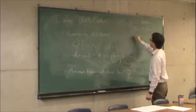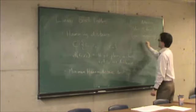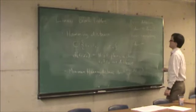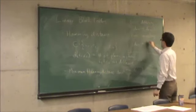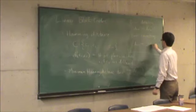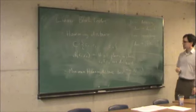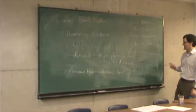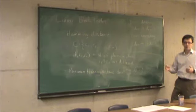For error correcting, if I have a code with minimum Hamming distance Dmin, we said the error correcting ability of that code is floor of one-half times Dmin minus one.